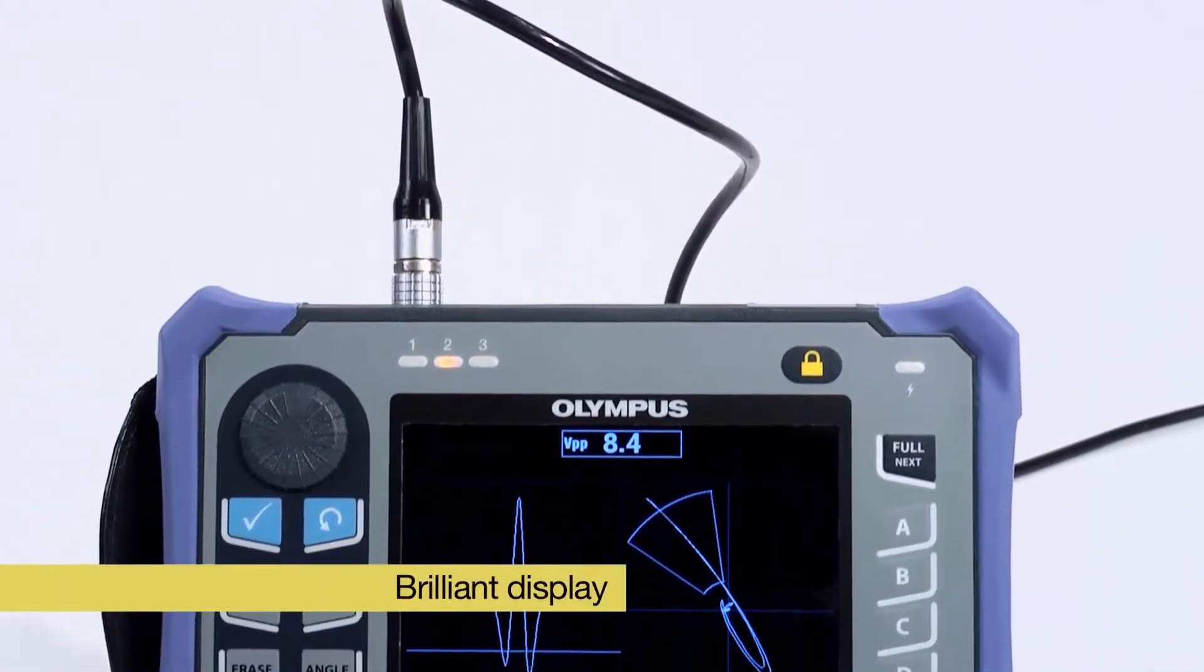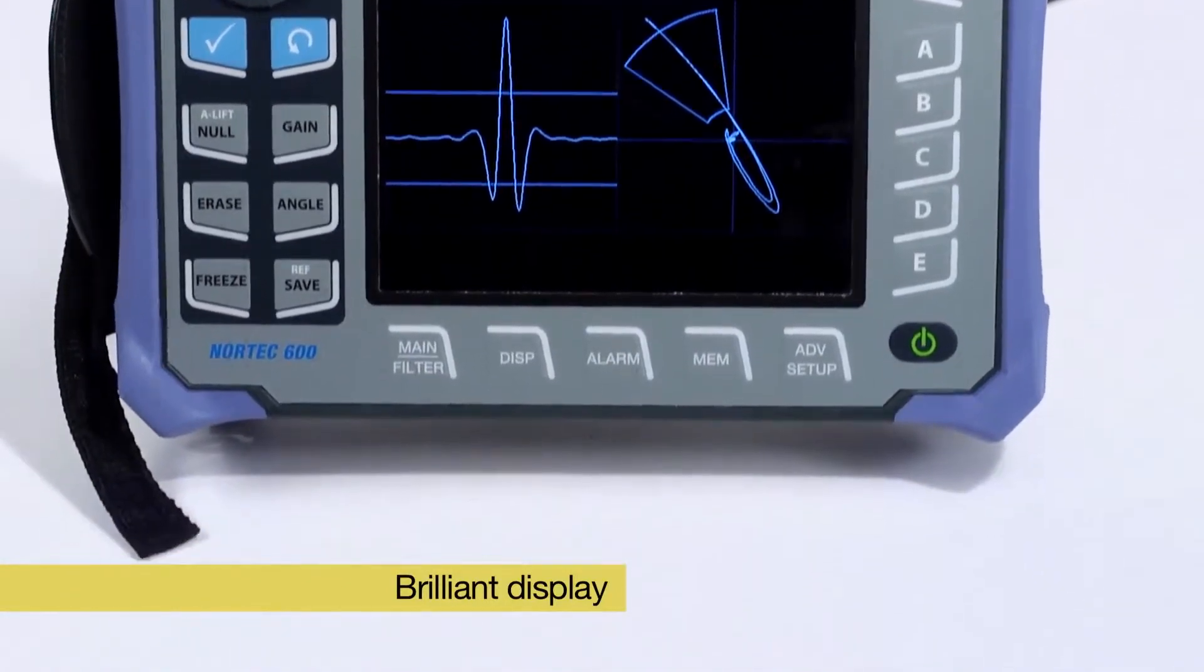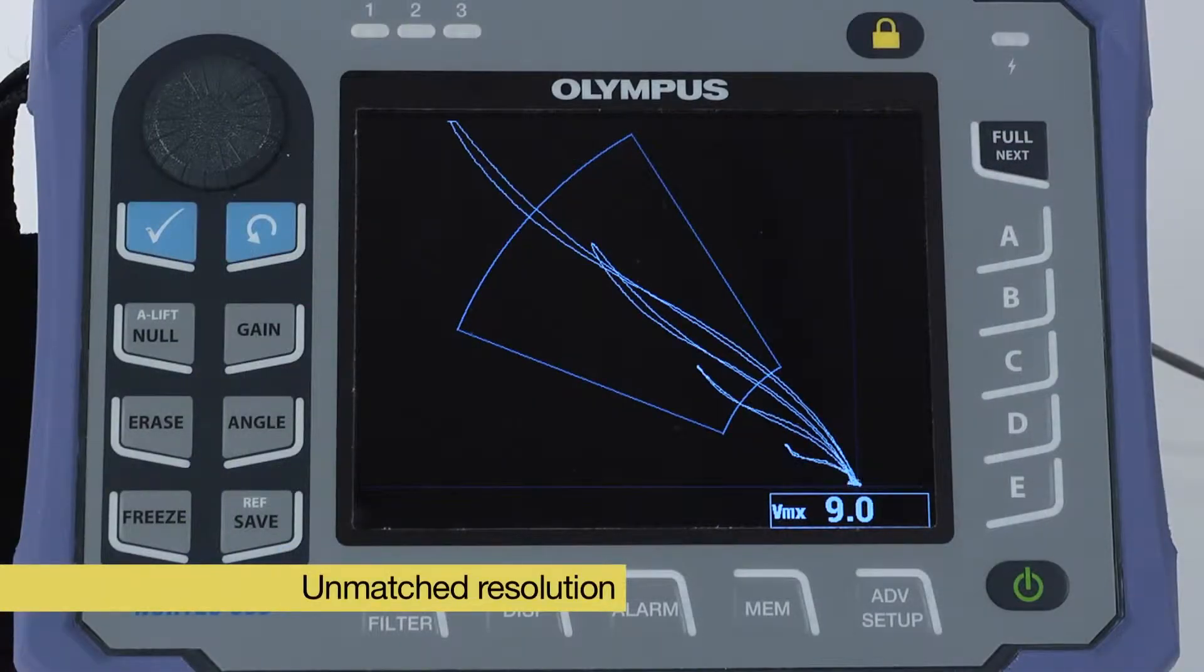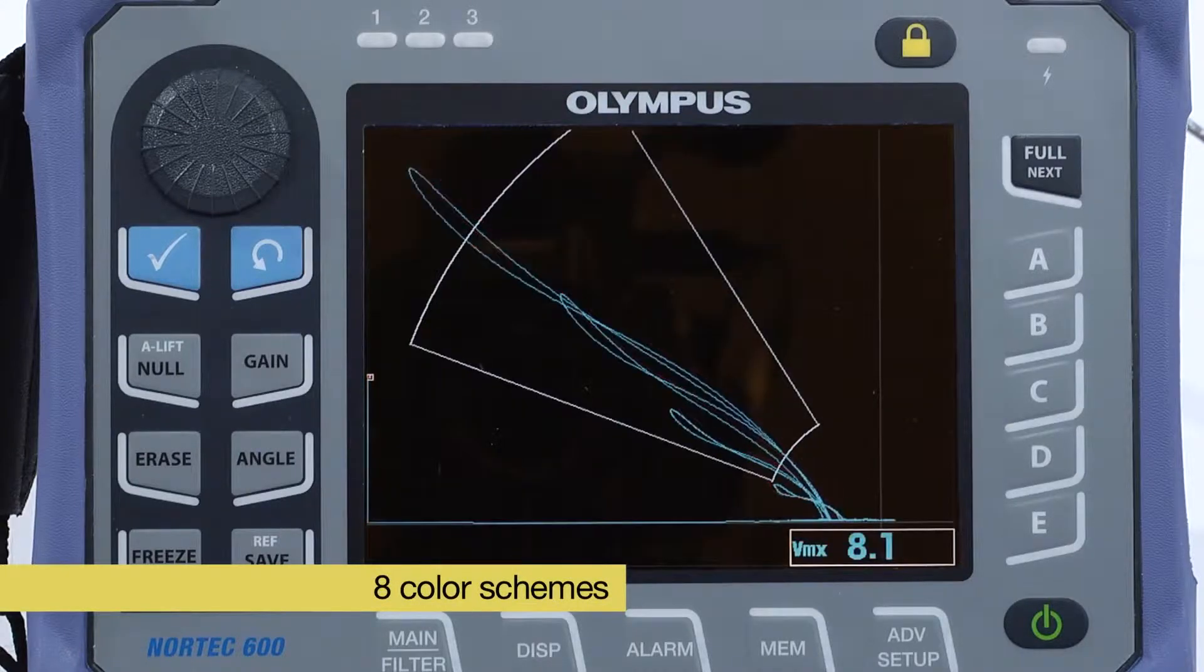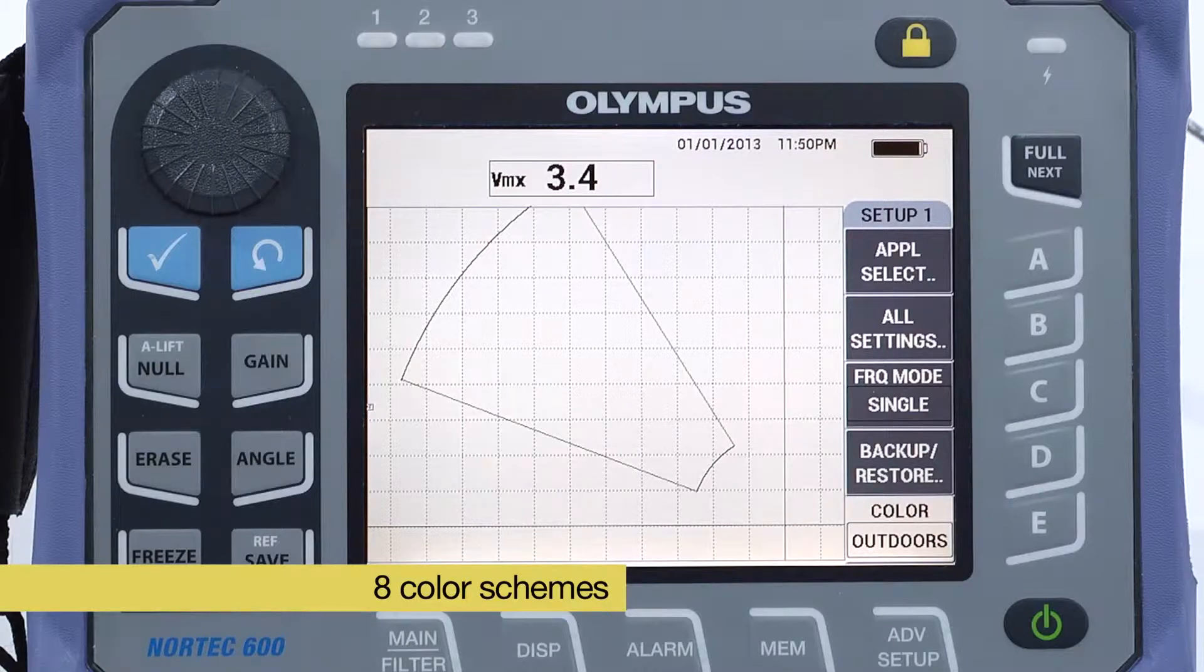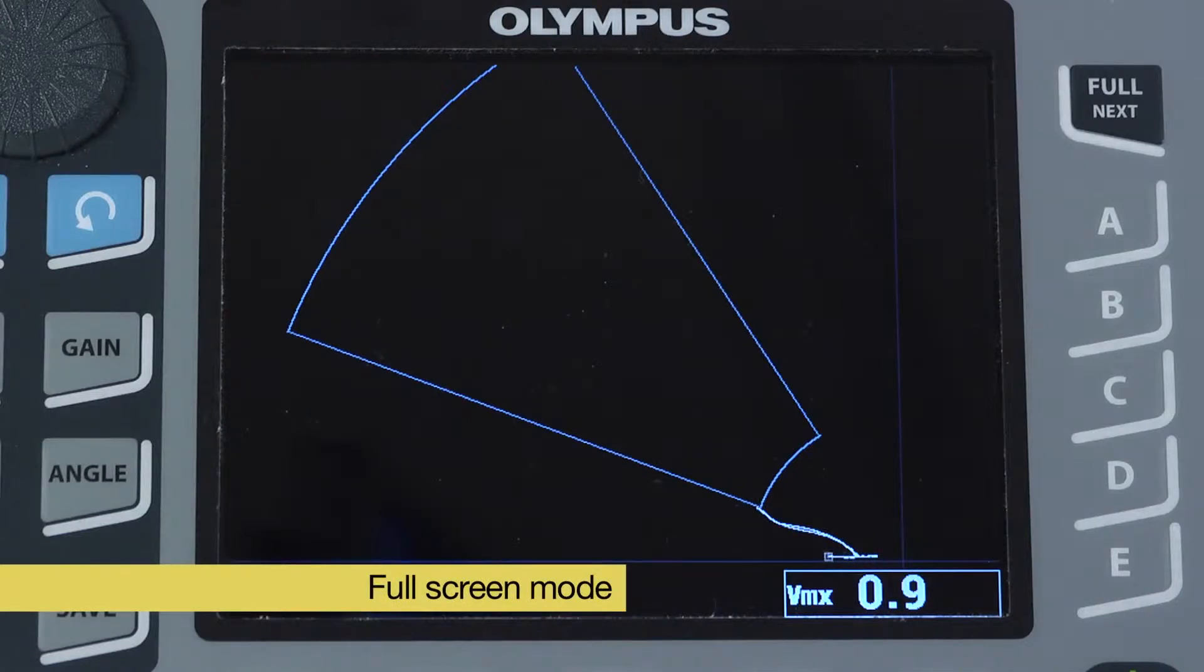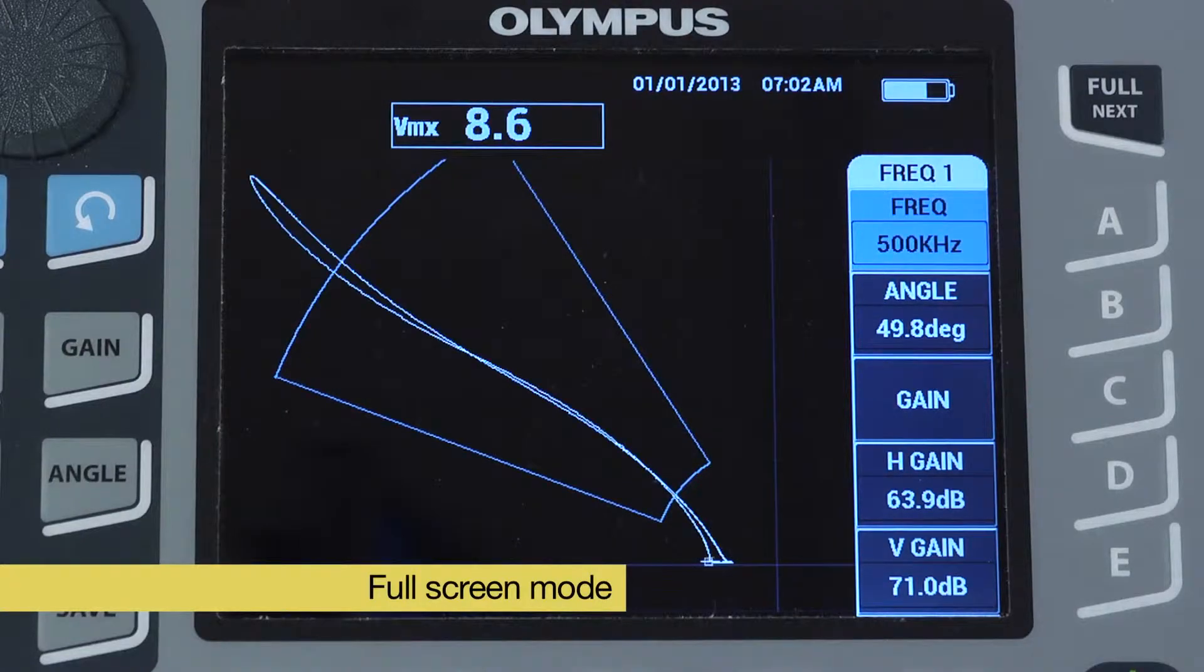The Nortec 600 offers the most brilliant display in the portable eddy current flaw detector market. No other product matches its signal quality, definition, resolution and ease of viewing in all lighting conditions. The instrument features eight color schemes including indoor and outdoor display configurations. To further enhance the signal viewing experience, the Nortec 600 features a true full-screen mode that can be toggled on and off from all configurations.